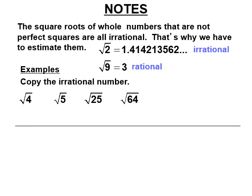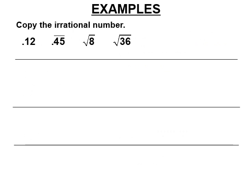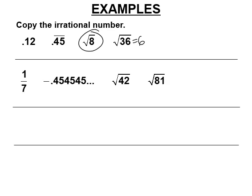The square roots we don't know the answer to are irrational. The square root of 4 is 2, the square root of 25 is 5, the square root of 64 is 8. The square root of 5 is an irrational number that goes on forever. The square root of 9 is 3, the square root of 16 is 4, the square root of 36 is 6. The square root of 50 is some irrational number that goes on forever. The square root of 49 is 7, so the square root of 50 is some decimal that starts with 7 and goes on forever — it's irrational. Notice this one next to it is a repeating decimal; that's a rational number. Irrational has to go on forever without a repeating pattern. Or the square root of 81 is just 9.